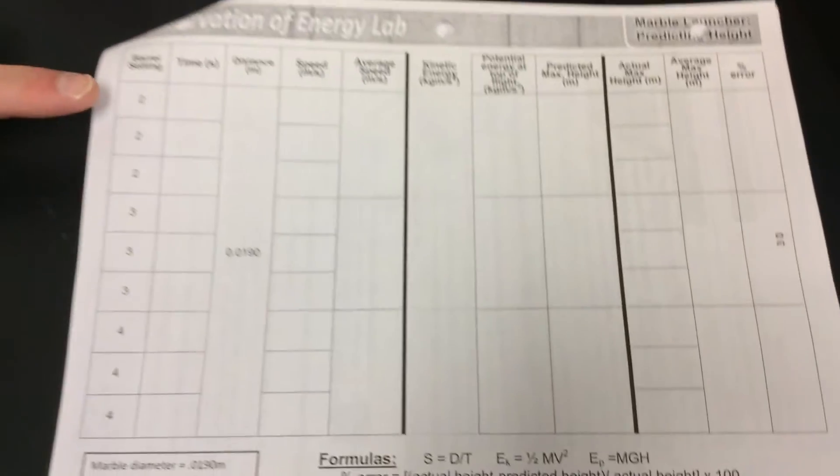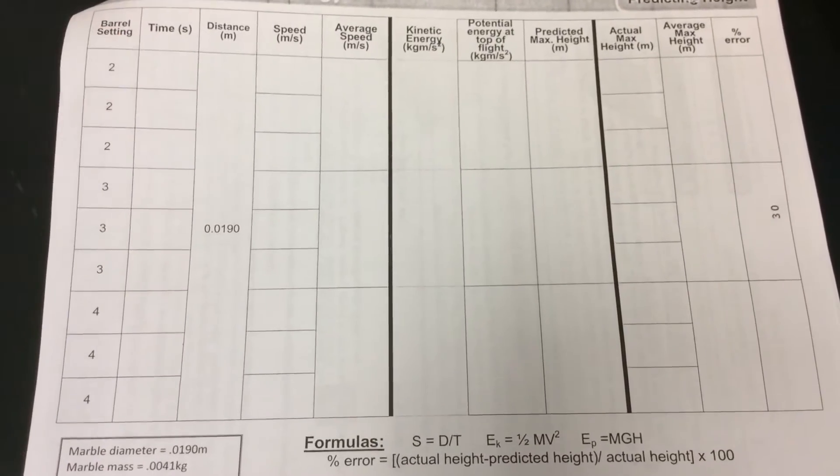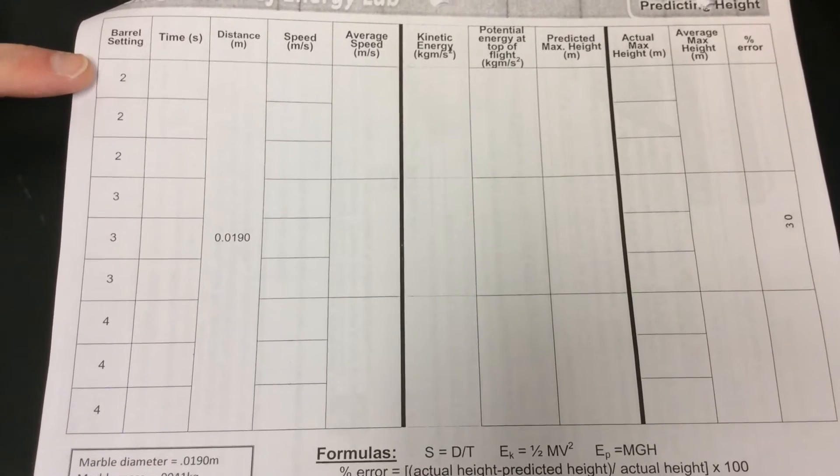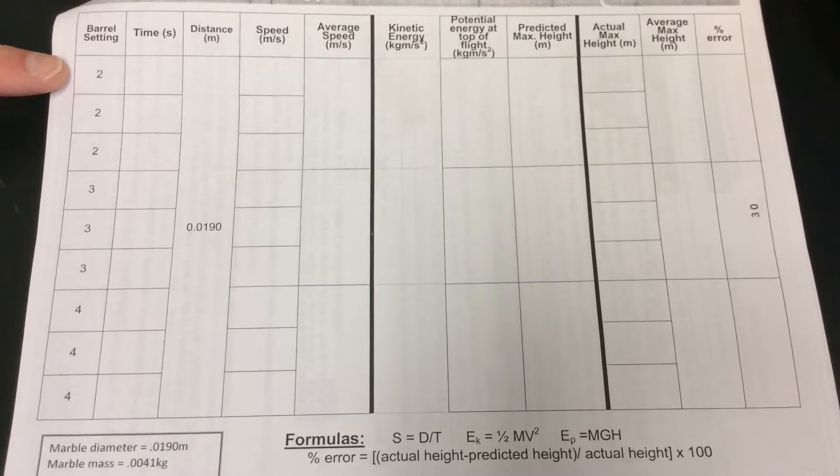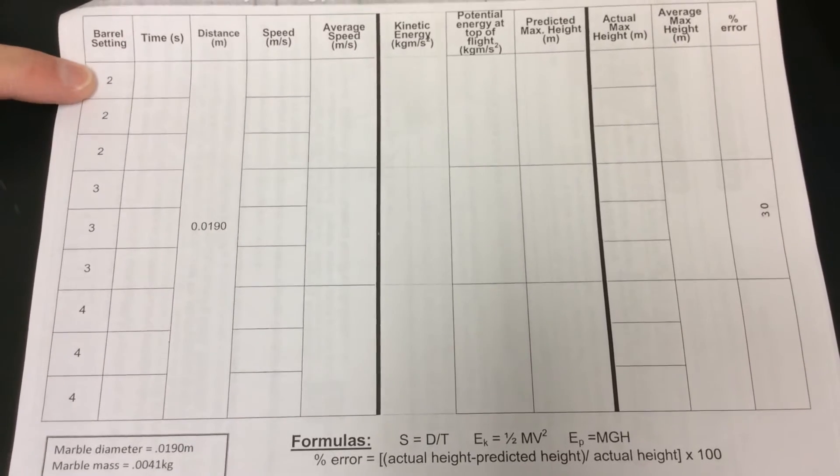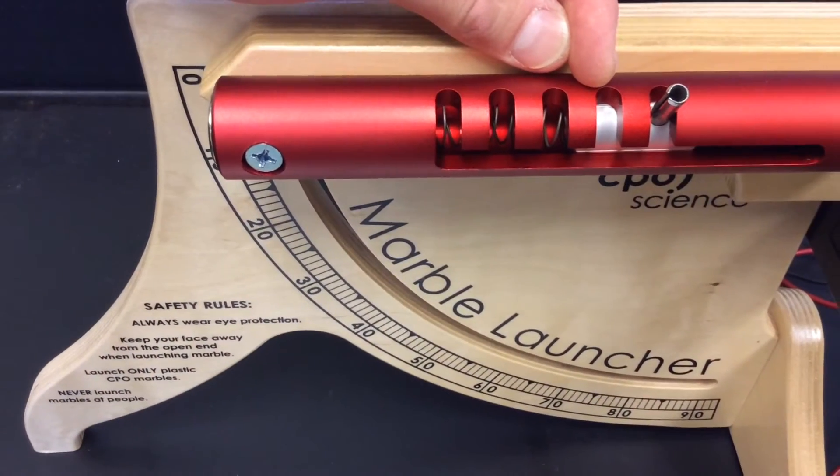The information that we're going to be getting is going to be including the time and we have different barrel settings. The barrel settings refer to the position of the bolt on the marble launcher. Two refers to the second opening in the marble launcher there.